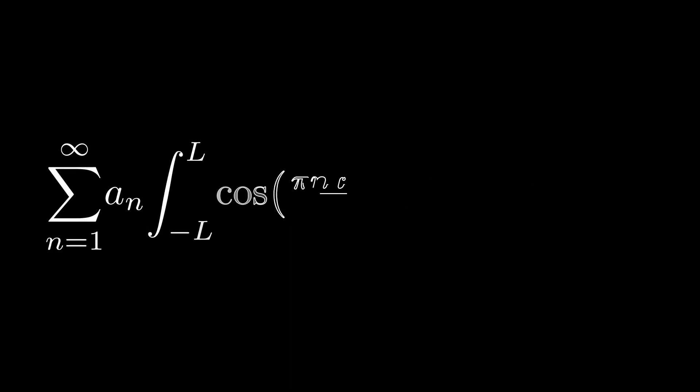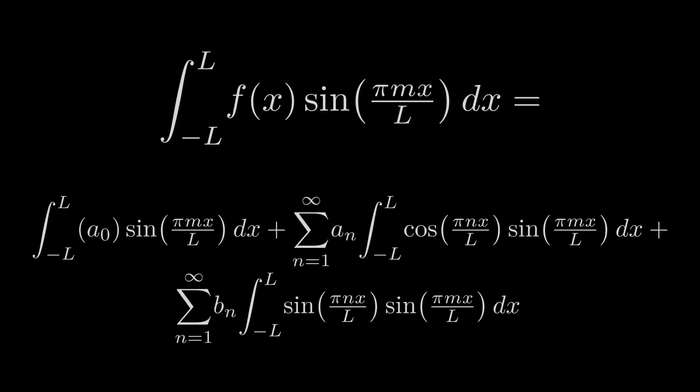Now take a look at the integral containing cosine. Using knowledge that sine is an odd function, cosine is an even function, and that the product of an odd and an even function is an odd function, we can quickly see that this integral is also equal to 0, since the bounds are negative l to l. This leaves us with one more integral on the right hand side of the equation.